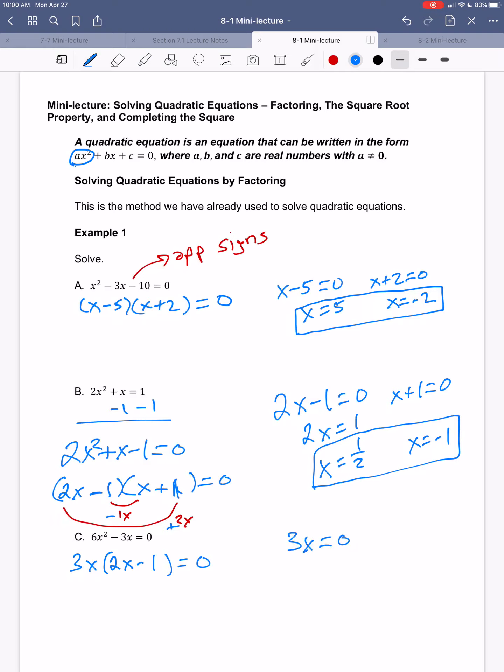3x equals 0, or 2x minus 1 equals 0. If I divide by 3, x equals 0. I'll add 1 to both sides and then divide by 2. So my solutions are x equals 0, or x equals 1 half.